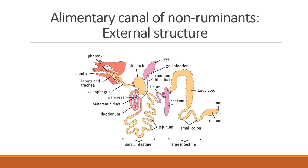The small intestine of a pig is divided into three: the duodenum, the jejunum, and the ileum. The large intestine is divided into the small colon, the large colon, the rectum, and the anus.